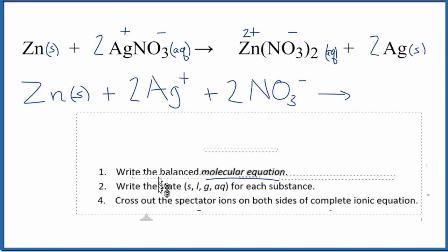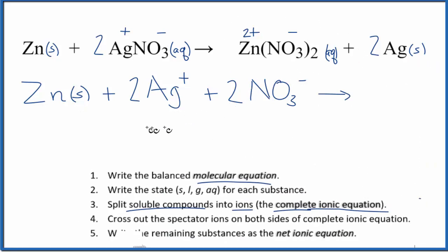Let's move this down a bit. For the products, we have Zn2 plus, plus nitrate NO3 minus. We have two of these nitrates. So put a coefficient of 2 in front, plus we have the two Ag, which we said that's a solid. We'll write a little S after that.